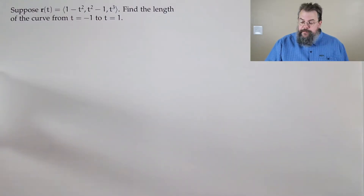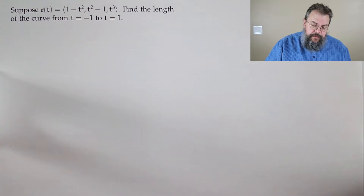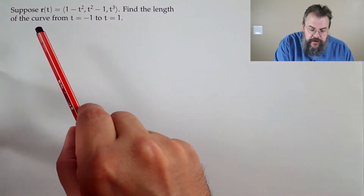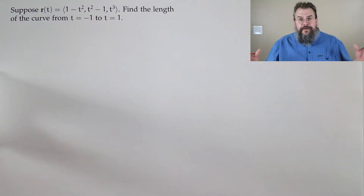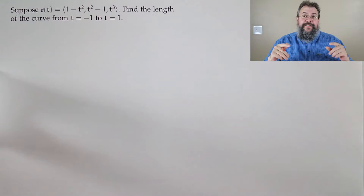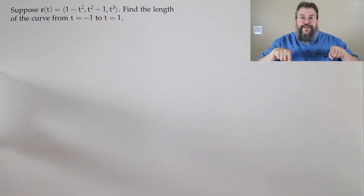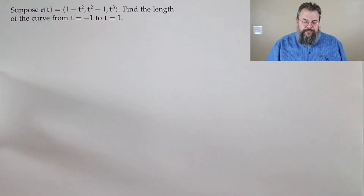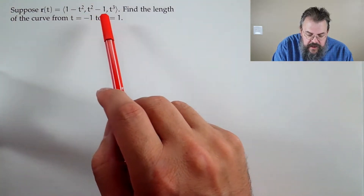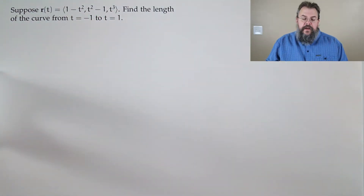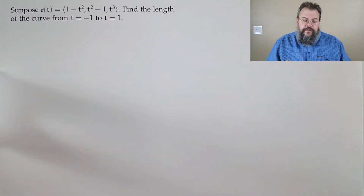Our very first problem for today. Suppose we have our parametric curve — we always use R to represent our parametric curve, and we assume things are already in vector form. So we have ⟨1 − t², t² − 1, t³⟩. The goal: find the length of the curve from t = −1 to t = +1.